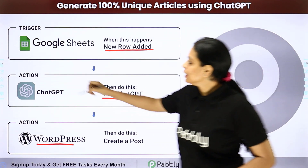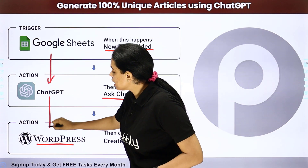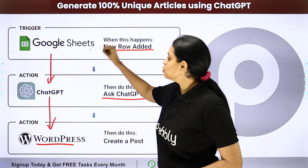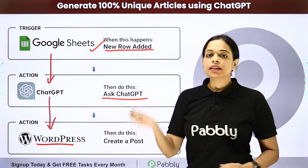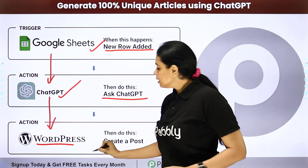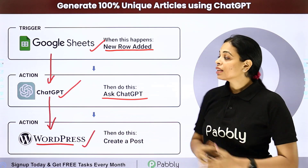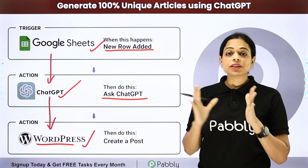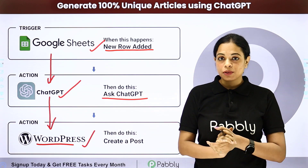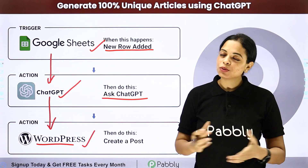How can you do this? You will be integrating these applications with the help of Pably Connect, where your trigger application will be Google Sheets. Then your first action application will be ChatGPT, then WordPress, and then again Google Sheet. To understand how to integrate and automate this entire process, let me take you to my screen.